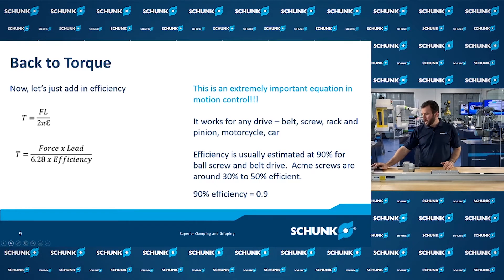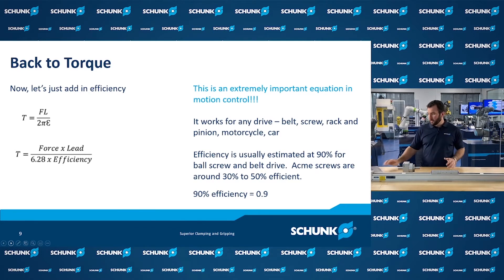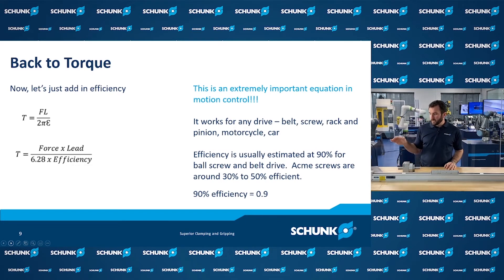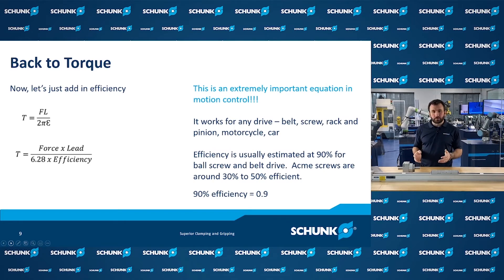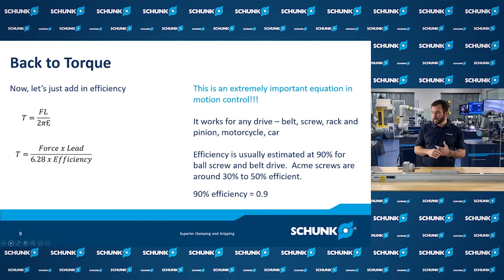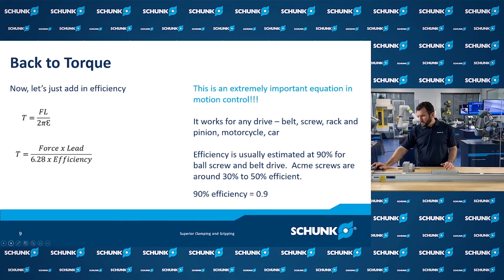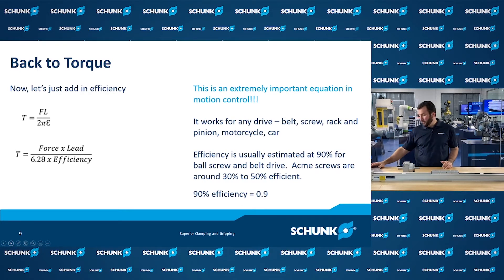The only other thing we need to add in here is efficiency. The equation becomes: torque equals force times lead divided by 2π times efficiency. Efficiency is important — a ball screw might be 90% efficient, whereas an ACME screw might be 30 to 50% efficient. If it is 90% efficiency, you're putting 0.9 into that formula.